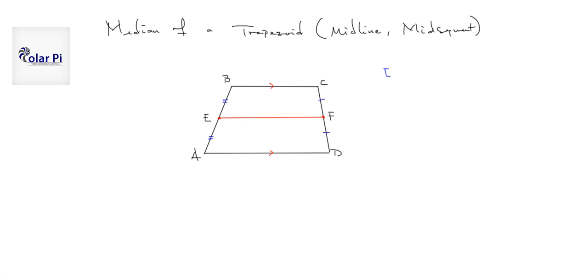And this median EF happens to be in length the average of BC and AD. So if the length of BC is A and the length of EF is C and the length of AD is B, then we would find that A plus B over 2 is equal to C.